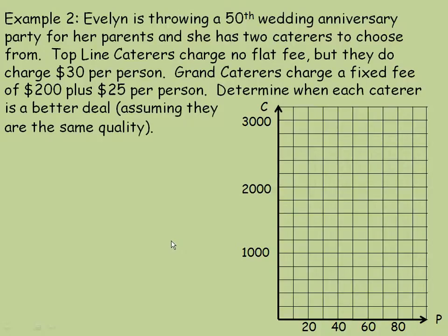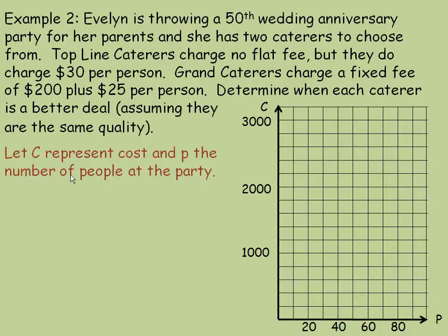In the example on the second page, Evelyn is throwing a 50th wedding anniversary for her parents and has two caterers to choose from. The first, Top Line Caterers, charges no flat fee but $30 per person. The second charges a fixed fee of $200 but only $25 per person. We are asked when each caterer is a better deal. We let capital C represent cost and P represent the number of people.